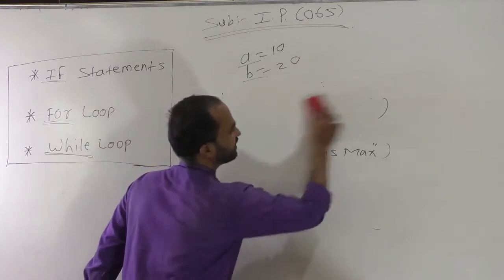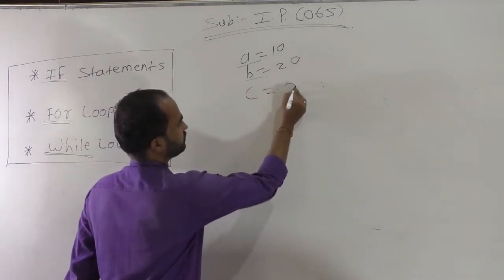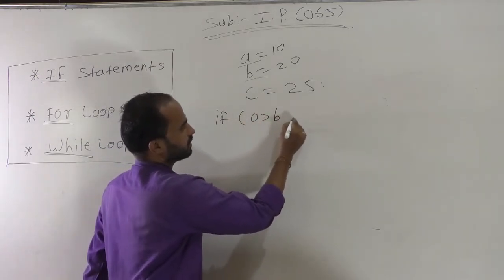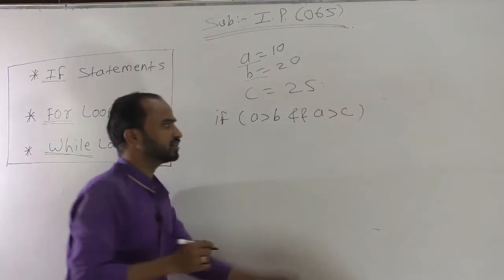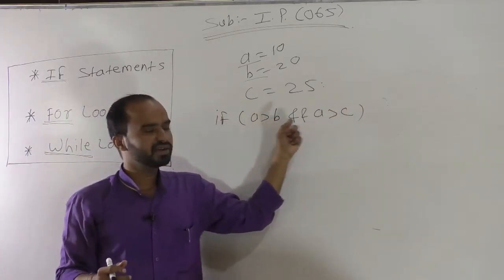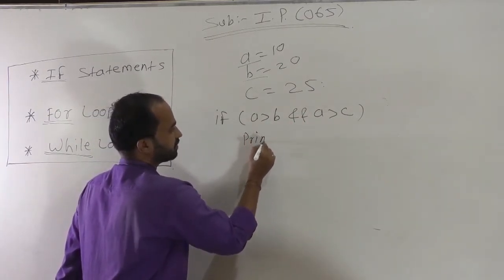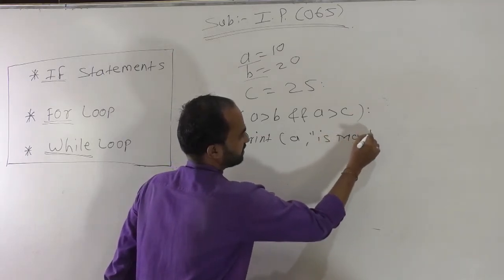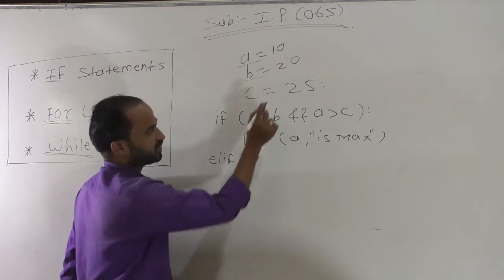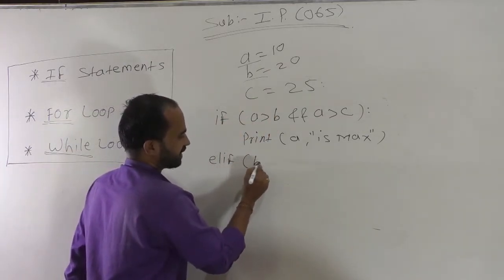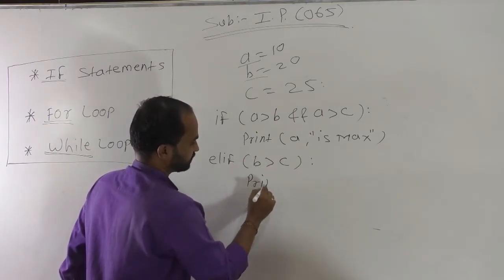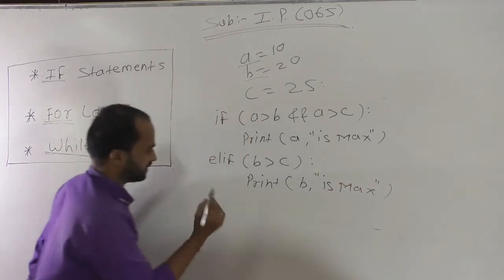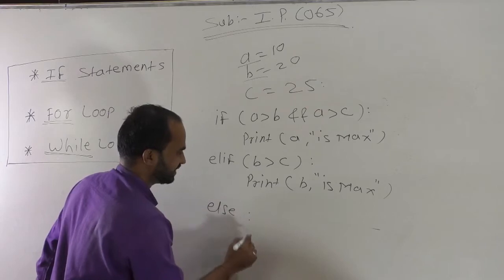Let's take one more example with three variables: a, b, and c. Suppose a is 25. To write the condition: 'if a is greater than b and a is greater than c', print 'a is max'. Then 'elif b is greater than c', print 'b is max'.